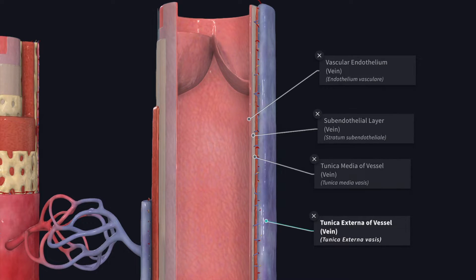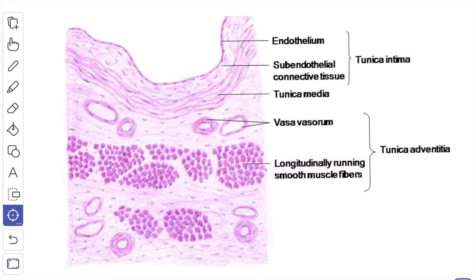Muscle fibers are completely absent in the venous spaces of the erectile tissue, in the veins of the cancellous bone, the dural venous sinuses, retinal veins and placental veins.